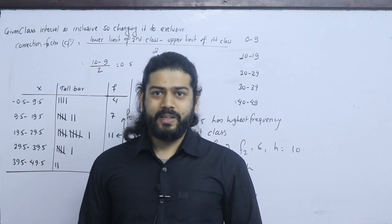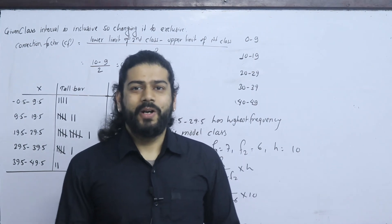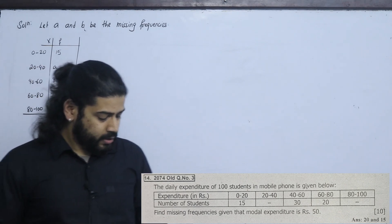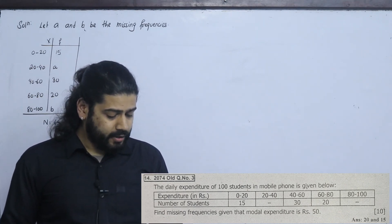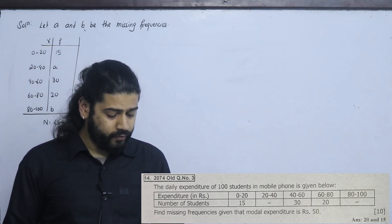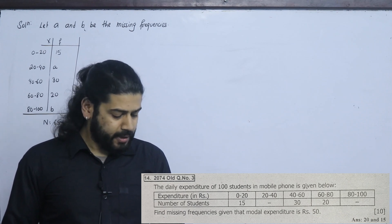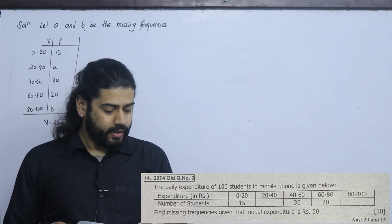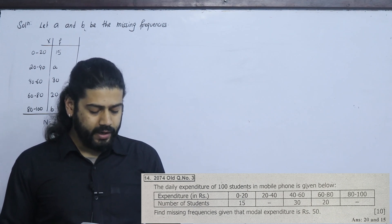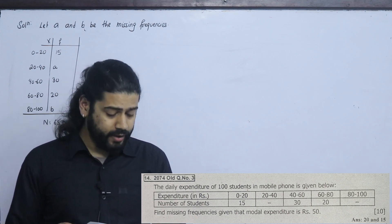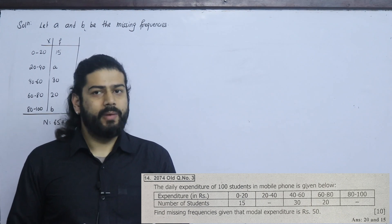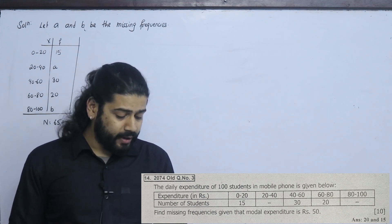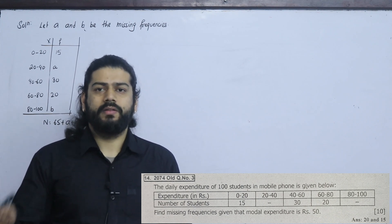The next question is about missing frequency. The daily expenditure of 100 students on a mobile phone is given. The expenditure classes are 0–20, 20–40, 40–60, 60–80, and 80–100, with number of students 15, A, 30, 20, B respectively, where A and B are missing frequencies. We are told the modal expenditure is 50.